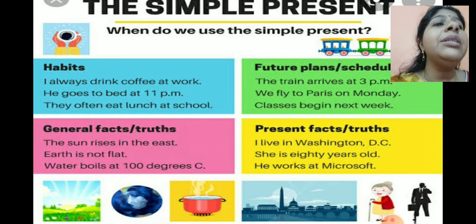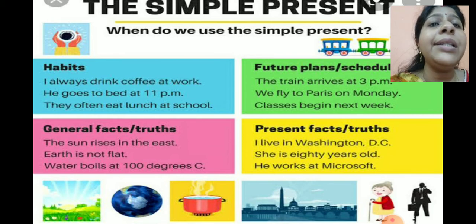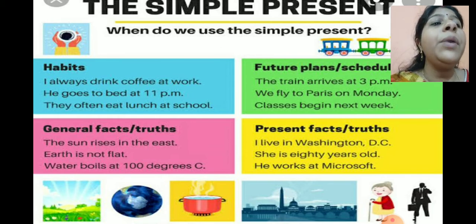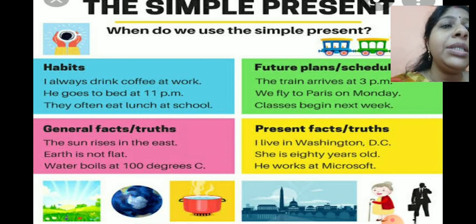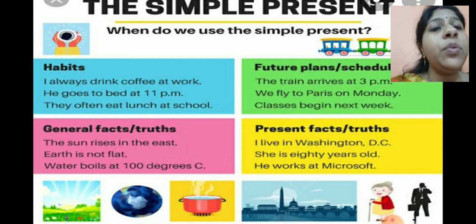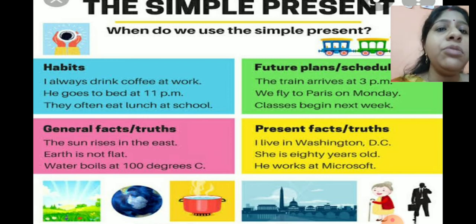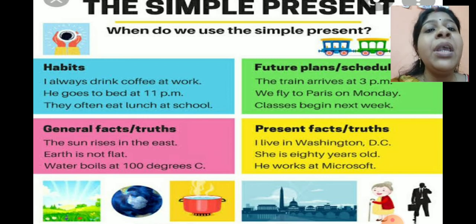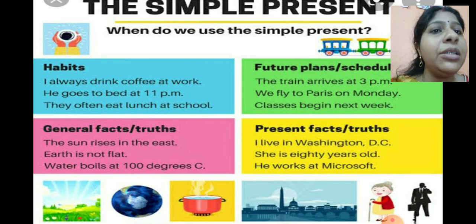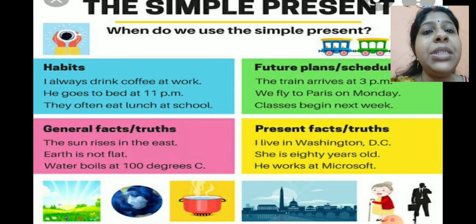Like 'The train arrives at 3 p.m.' — 'arrive' is the verb and you add S to get 'arrives'. 'We fly to Paris on Monday.' 'Classes begin next week.' You are talking about something you are going to do in the future. And when we talk about general facts or general truths, we use simple present tense.